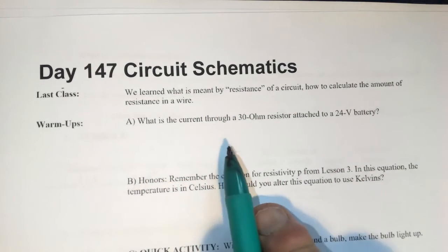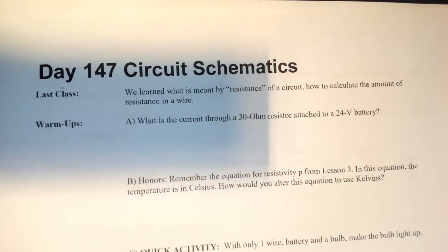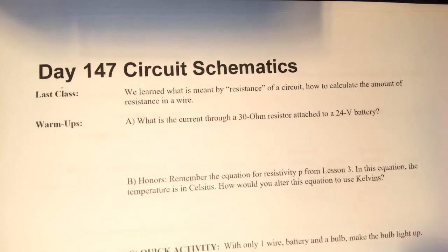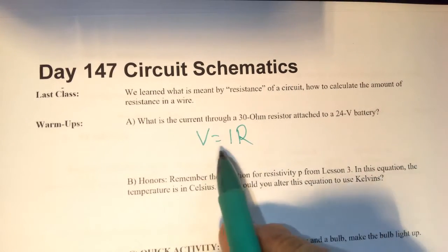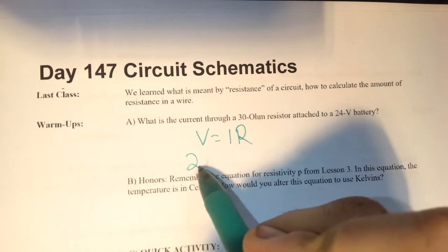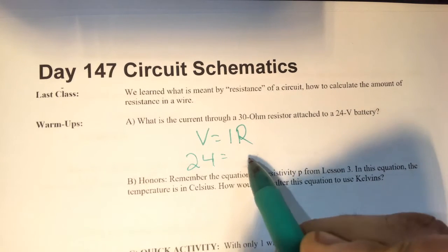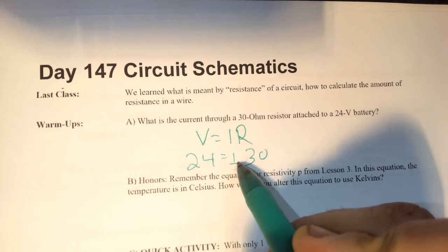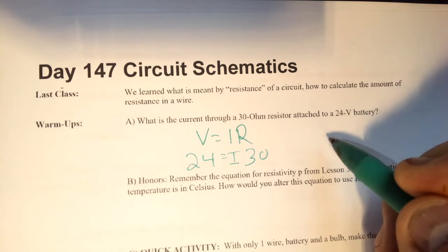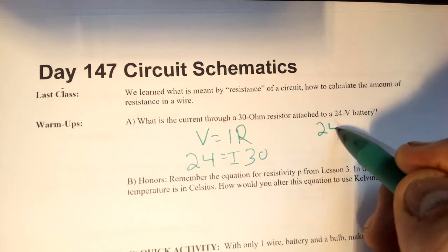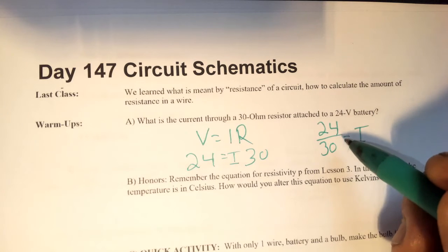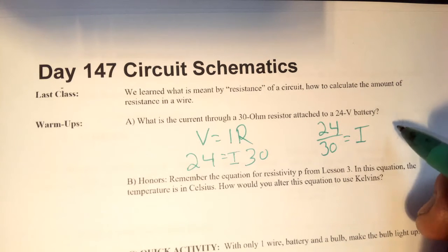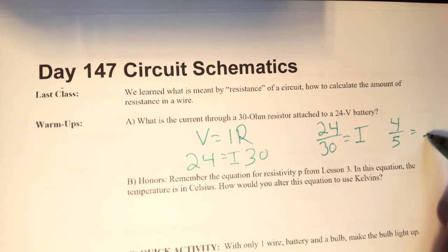What is the current through a 30 ohm resistor attached to a 24 volt battery? So we're going to use the equation V equals IR. The voltage is 24, the resistance is 30, so we are solving for the I. We divide both sides by 30. We get 24 divided by 30 is equal to I. Reducing this down, I know that 6 goes into 24 and 6 goes into 30. That's going to be 4 fifths or .8, .8 amps.